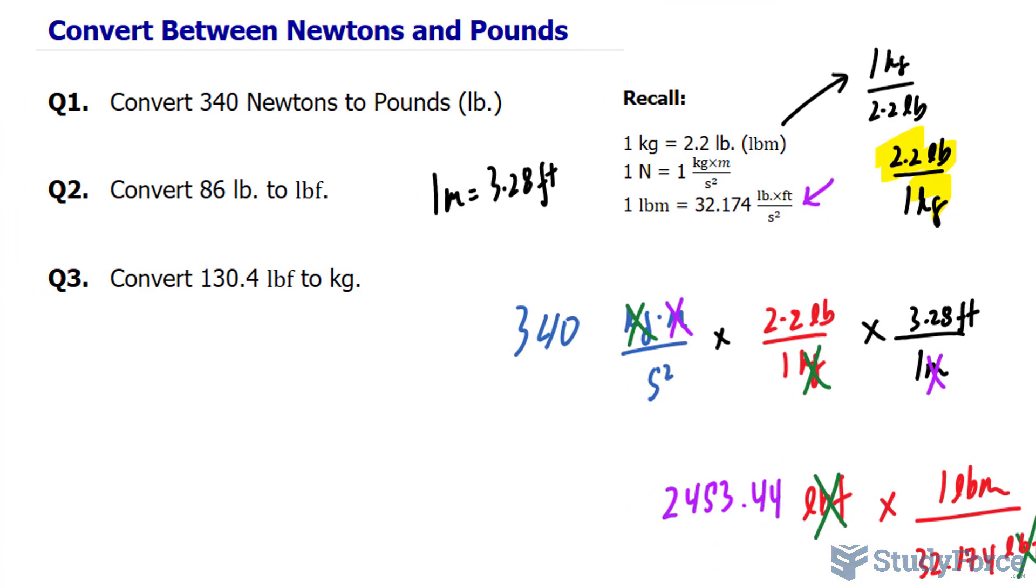Let's do one more example. And if you still need more help, I'll show you question three in a separate video. So this time we want to convert 86 pounds to LBF. All right. So we'll write down 86 LBM. It's the same thing as saying LB per pounds.